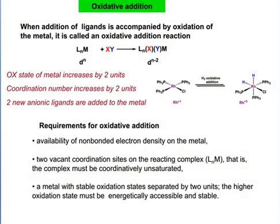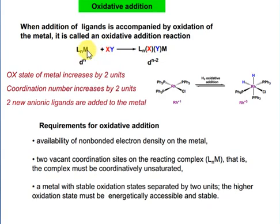Today I will discuss what is oxidative addition. This is a general representation of oxidative addition — what happens is two ligands, two atoms of a molecule, or two entities or ions from a particular ligand molecule get added to the central metal atom of a complex.